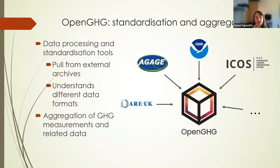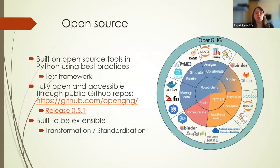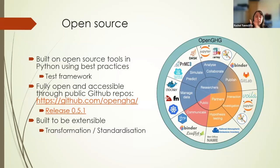As well as measurements, there are additional products like air history maps, emissions inventories, and global scale information. Connecting these pieces is a key part of what we've been doing — ultimately building a pipeline for producing these outputs. The tool is built on open source principles; Jupyter notebooks are at the heart of what we're doing, and reproducible science is really important. We've pulled together lots of open source tools into a Python-based library, fully open and accessible on GitHub.